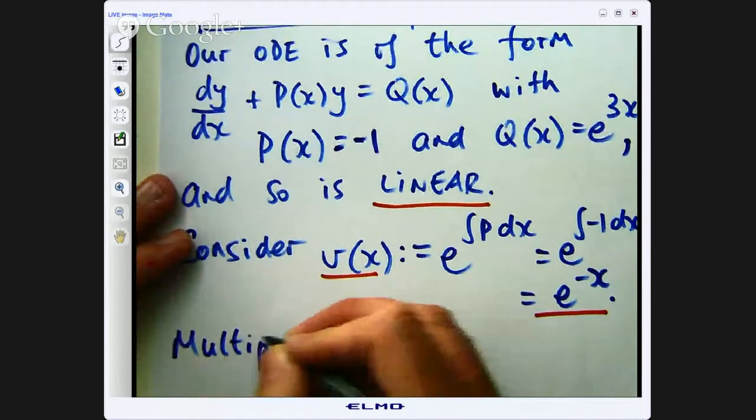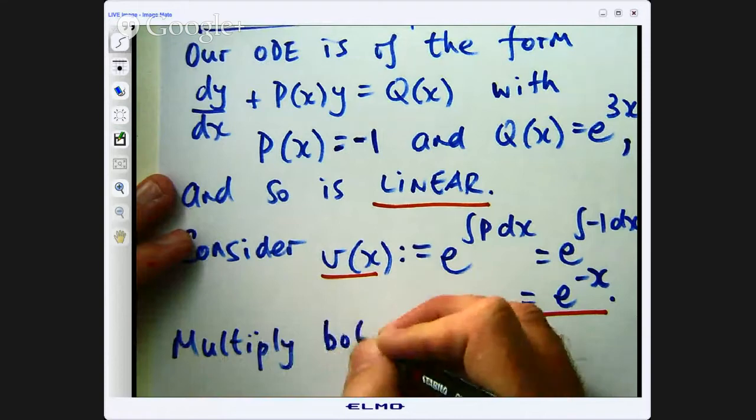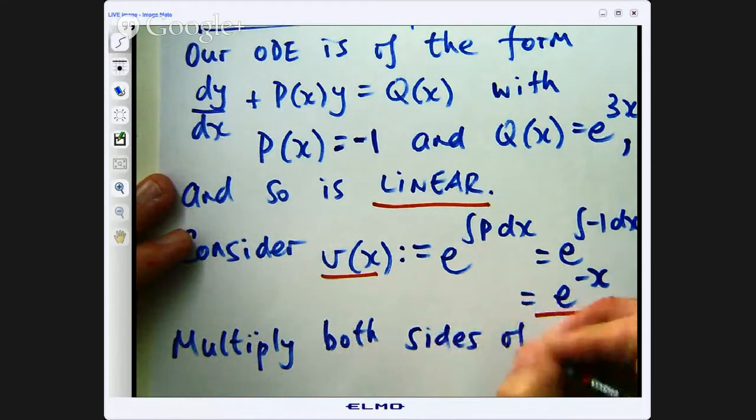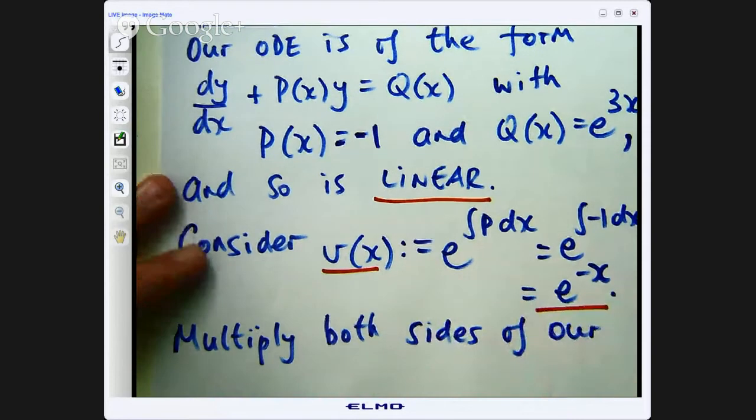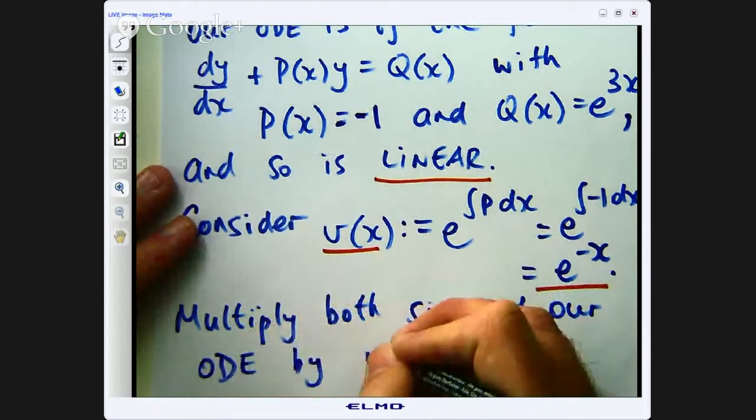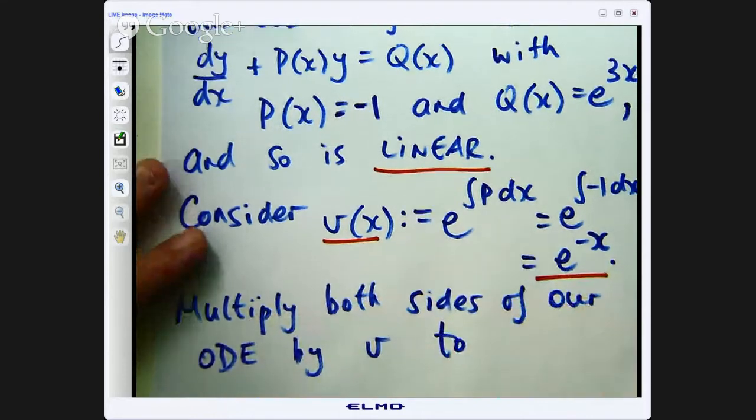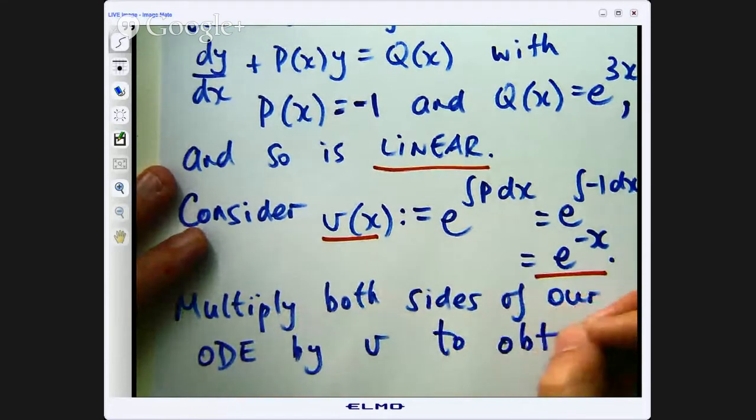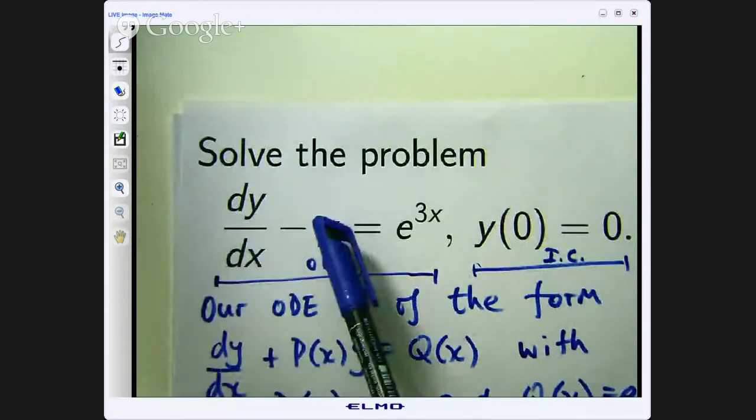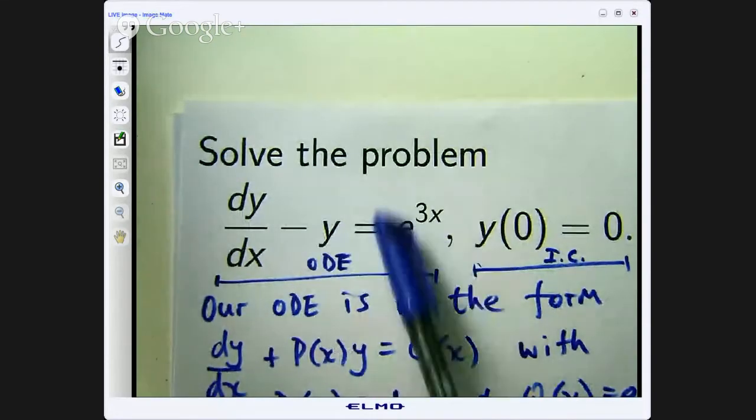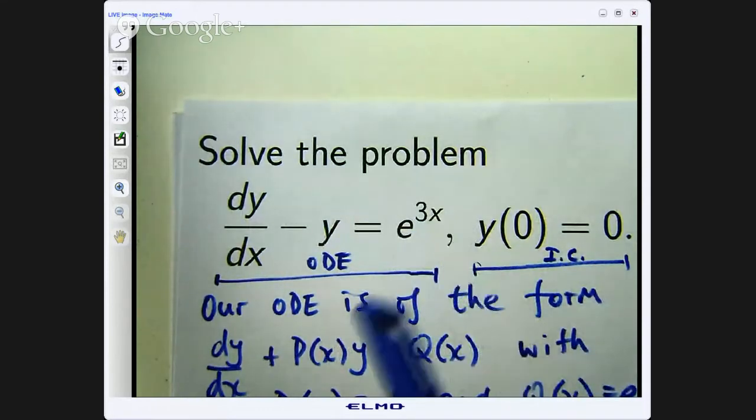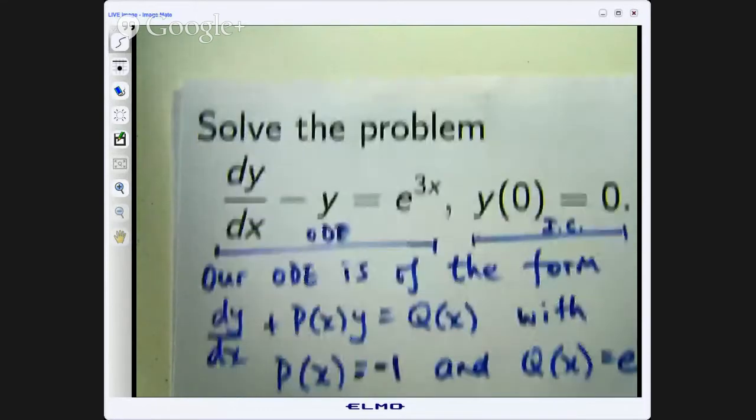Now the good question is why would you want to do that? Well it will become clear in a minute. So multiply both sides of our ODE by v to obtain the following. So I am going to get e to the negative x dy/dx minus e to the negative x y and multiply this by e to the negative x will give us e to the 2x.